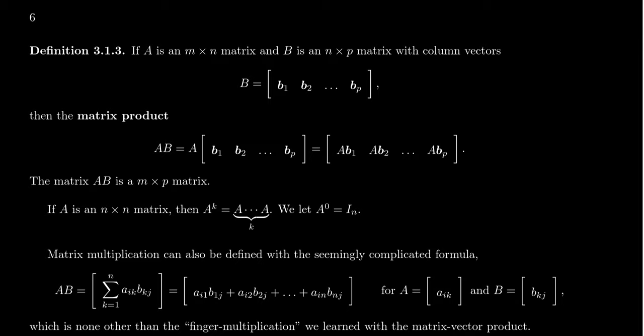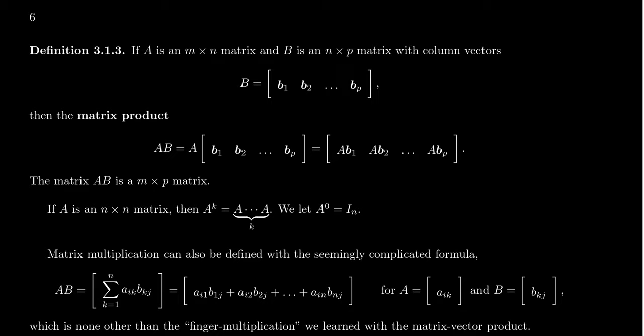Now let's talk about matrix multiplication — what does it mean to multiply two matrices together? We are capable of multiplying a matrix A by a vector, and since matrices are just sets of vectors, we can extend the matrix-vector product to form a matrix product. If A is an m by n matrix and B is an n by p matrix, the number of columns in A must equal the number of rows in B for the product to be defined.